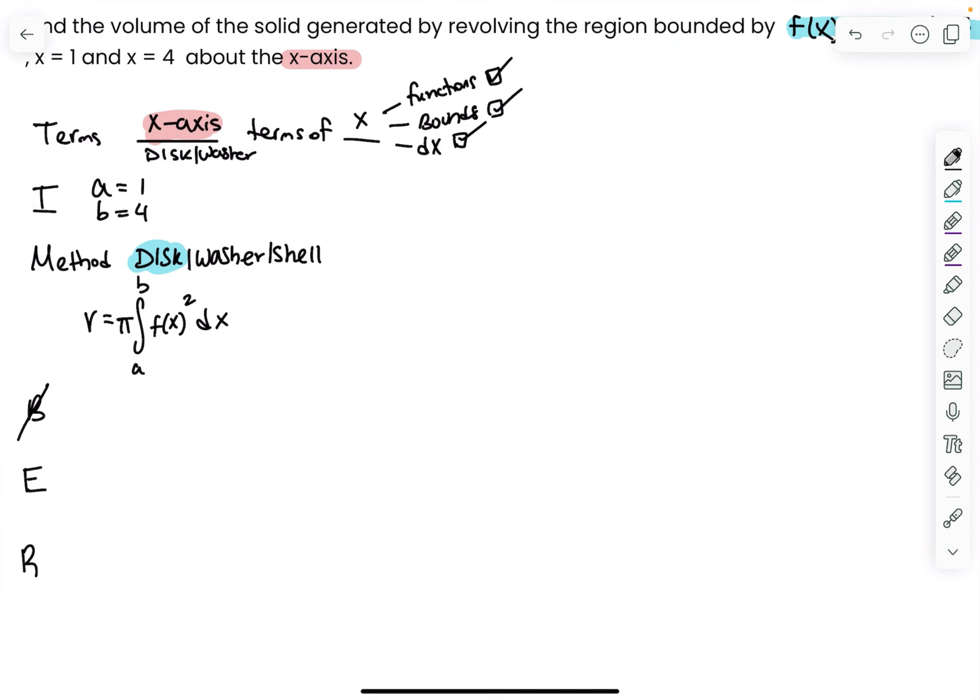I skip this step because this step is to figure out which function is which. You only have one function here, so that's only useful when we get to washer or shell.